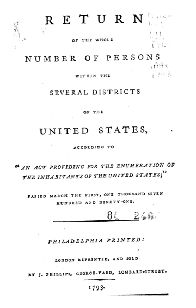Race and ethnicity in the United States Census, defined by the Federal Office of Management and Budget and the United States Census Bureau, are self-identification data items in which residents choose the race or races with which they most closely identify, and indicate whether or not they are of Hispanic or Latino origin — the only categories for ethnicity. The racial categories represent a social-political construct for the race or races that respondents consider themselves to be, and generally reflect a social definition of race recognized in this country.